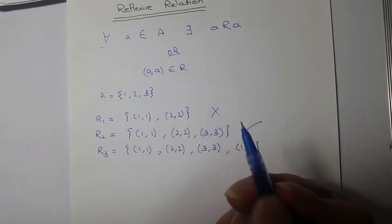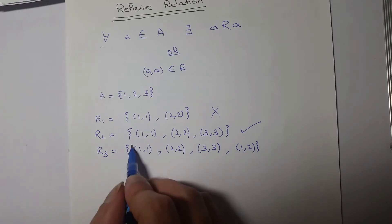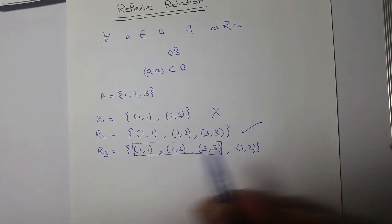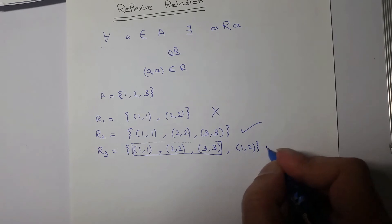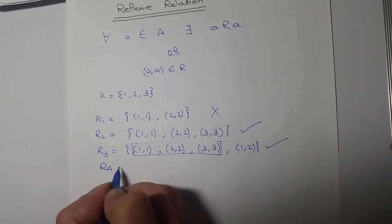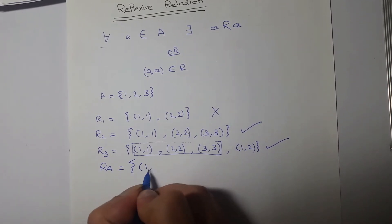So we got what we wanted, other than that there could be anything. We don't care. This is a reflexive relation. R4 is {(1,1), (2,2), (3,2)}.